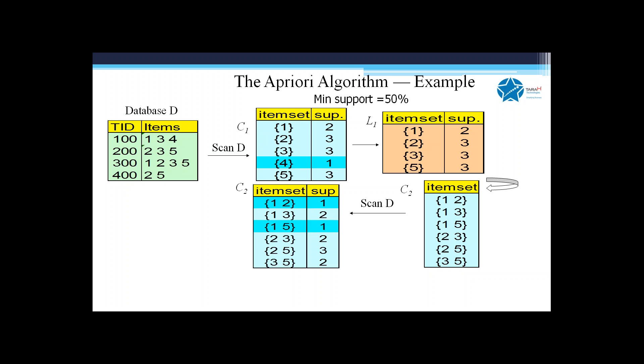Then we find the required transactions of size two. There are four such itemsets which satisfy the minimum support condition.